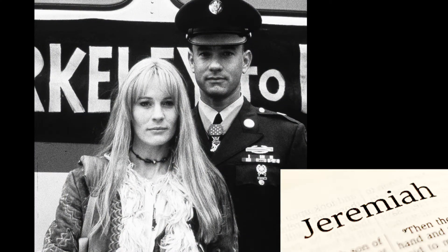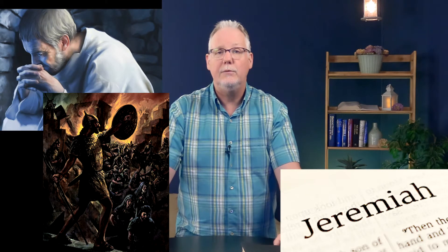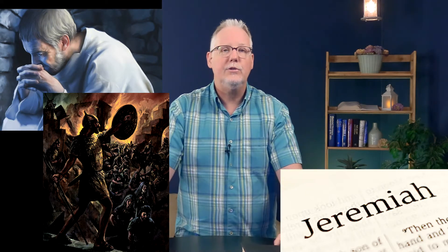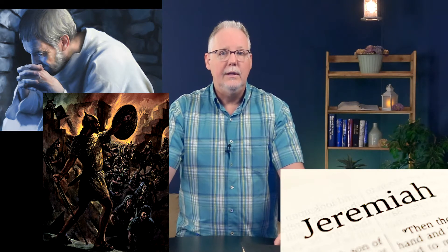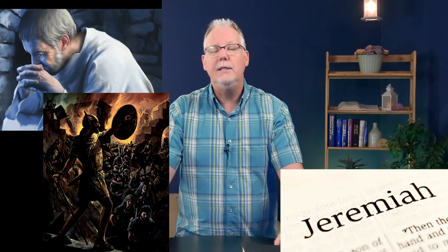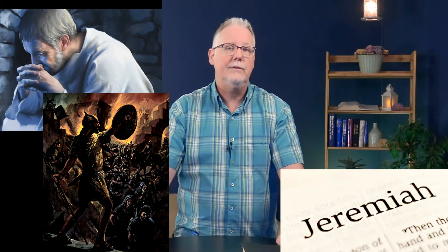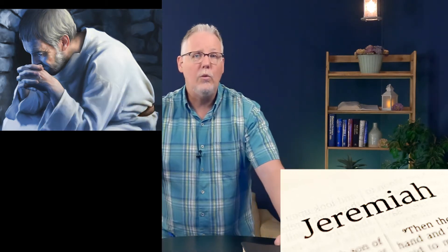Isaiah is followed by the book of Jeremiah. The icon I use for Jeremiah is the movie Forrest Gump, because like Forrest Gump's girlfriend Jenny, God's bride Israel is unfaithful. Whereas Isaiah predicts and sees the end of the northern kingdom of Israel, Jeremiah prophesies and sees the end of the kingdom of Judah in the south. He prophesied around 625 to 586 BC, and Jeremiah lived to see the destruction and deportation of Judah to Babylon and the destruction of the city of Jerusalem. For this reason he's been called the weeping prophet.